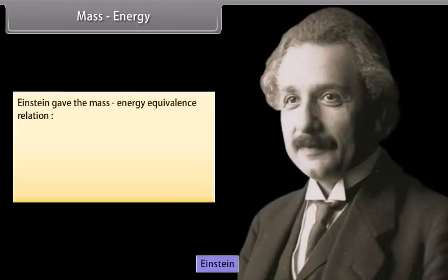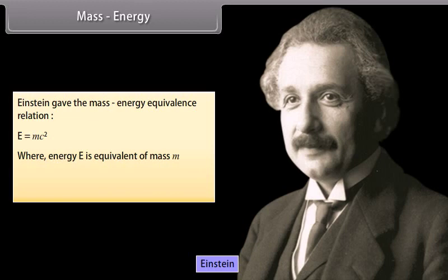Mass-energy: Einstein gave the mass-energy equivalence relation E = mc², where energy E is equivalent to mass M, and c is the velocity of light in vacuum, that is 3 × 10^8 meters per second.